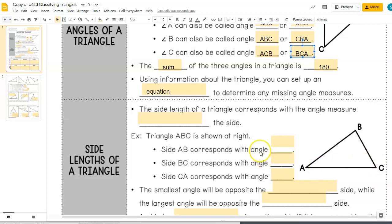The side length of a triangle corresponds to the angle measure opposite the side. So triangle ABC is shown over here. Side AB corresponds with angle C. Side BC goes with angle A. And side CA goes with angle B. The smallest angle will be across opposite the shortest side. The largest angle will be opposite the longest side.